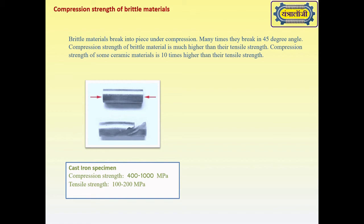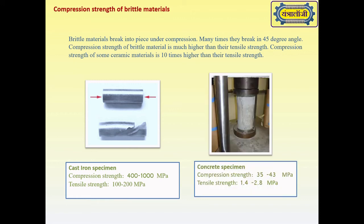For example, cast iron specimen has tensile strength up to 100 to 200 MPa, but their compression strength is 400 to 1000 MPa. Similarly, concrete specimen has tensile strength up to 1.4 to 2.8 MPa, but their compression strength is 35 to 43 MPa.